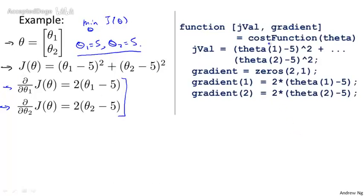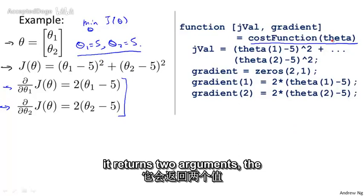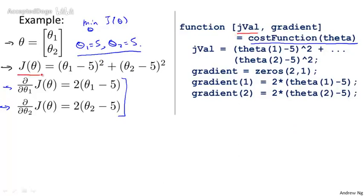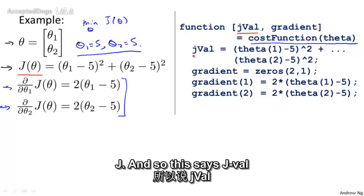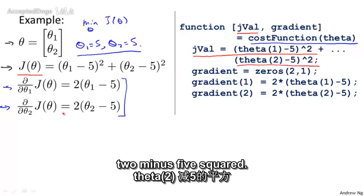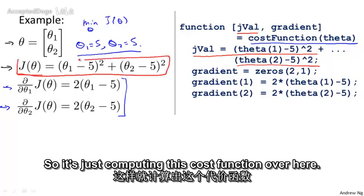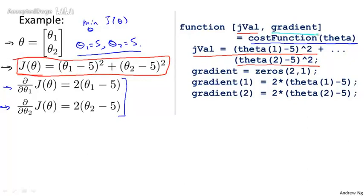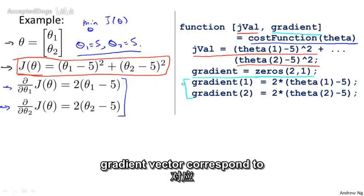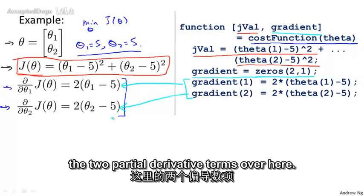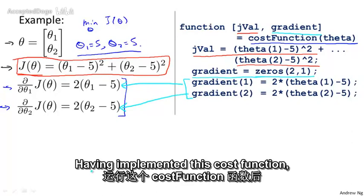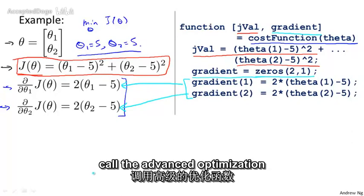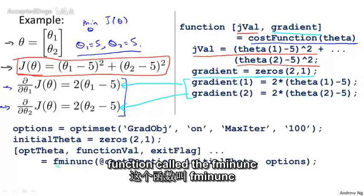We implement a cost function like that. What this does is it returns two arguments. The first, jval, is how we compute the cost function J — so jval equals (theta 1 minus 5) squared plus (theta 2 minus 5) squared, just computing this cost function. The second argument this function returns is gradient, which is going to be a two-by-one vector. The two elements of the gradient vector correspond to the two partial derivative terms.